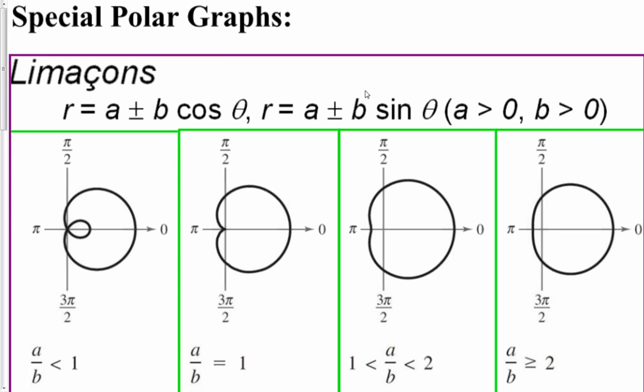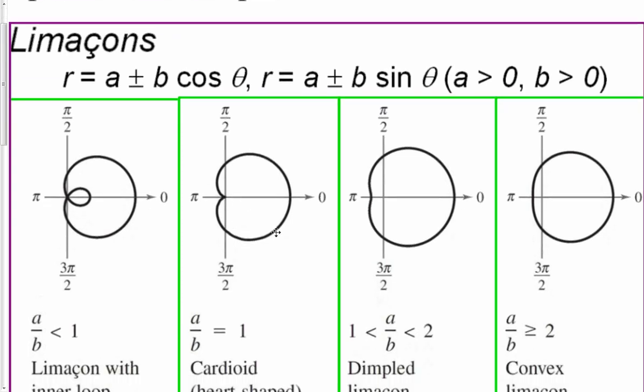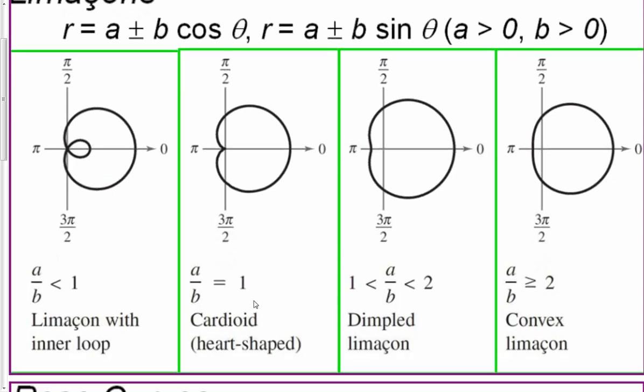Examples of graphs like this, I believe it's called limaçons, do not speak French sorry, are these where they kind of look like they could almost be circles, but some have an indent and some have even a loop-de-loop a little bit inside there, right? That is where a over b is less than 1. If a and b equal 1, we kind of get the peach look, I guess, apple peach, I don't know.